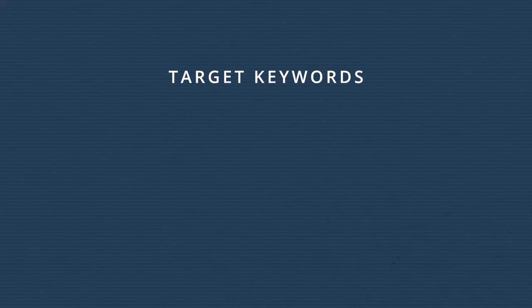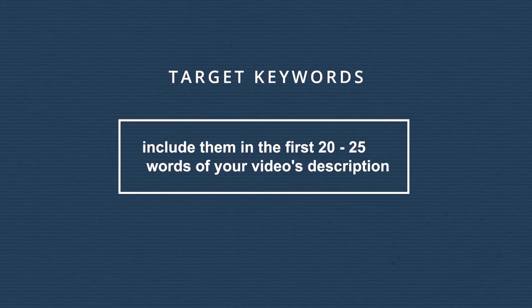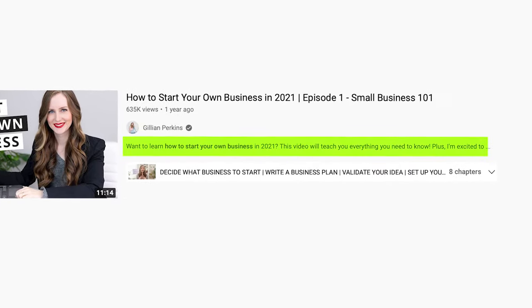Another bonus tip is to add your target keywords in the first 20 to 25 words of your video's description. That's because this is the only part of your video's description that viewers can see before they click on your video, so it's the only part that can affect whether they choose to click — meaning it affects your CTR and therefore your ranking. So let's move on and talk about keywords.